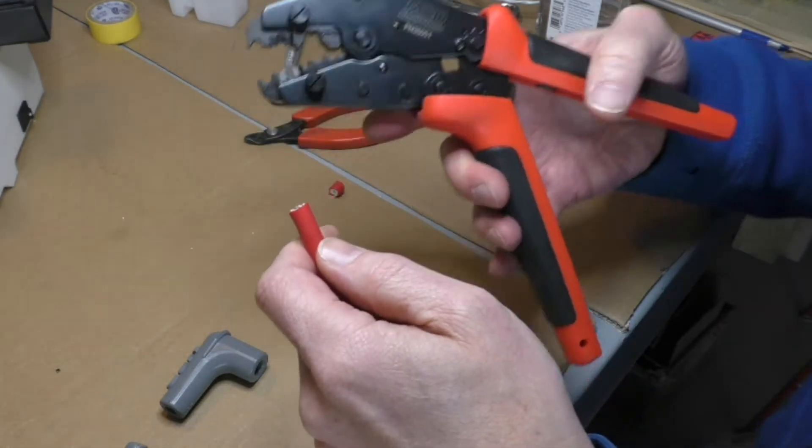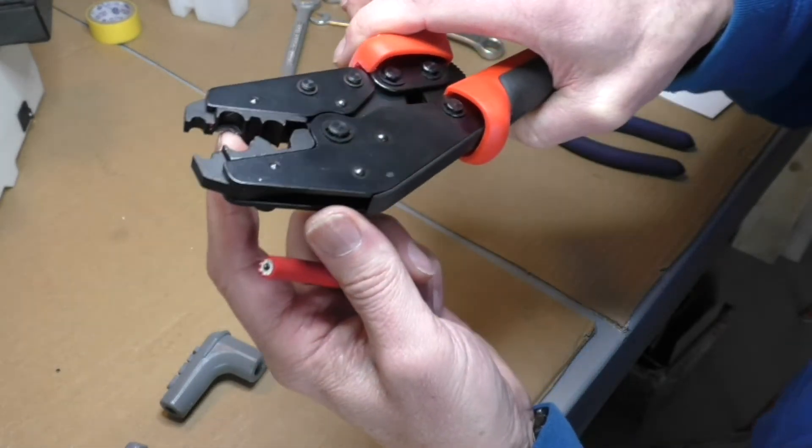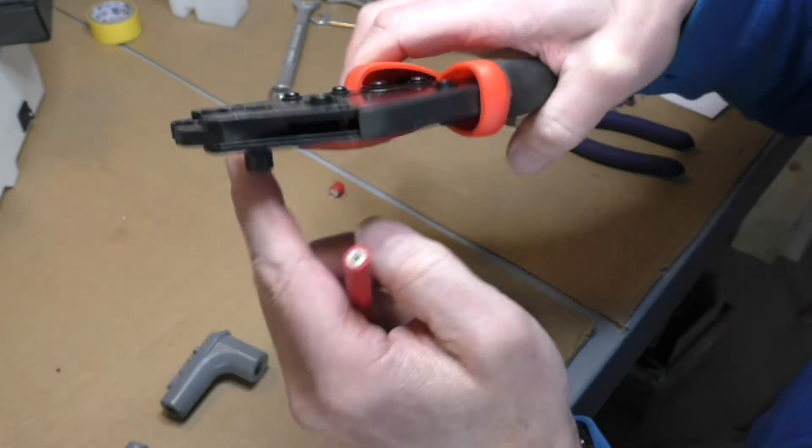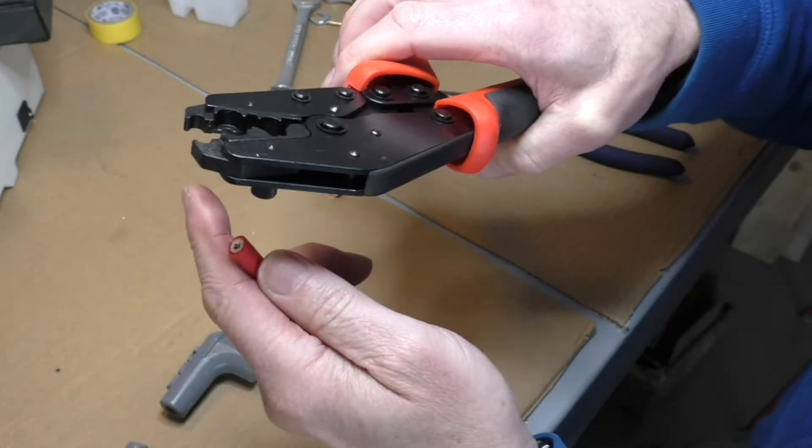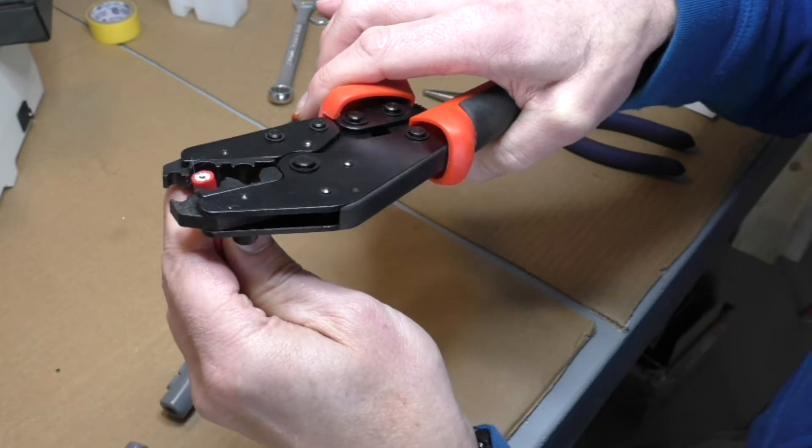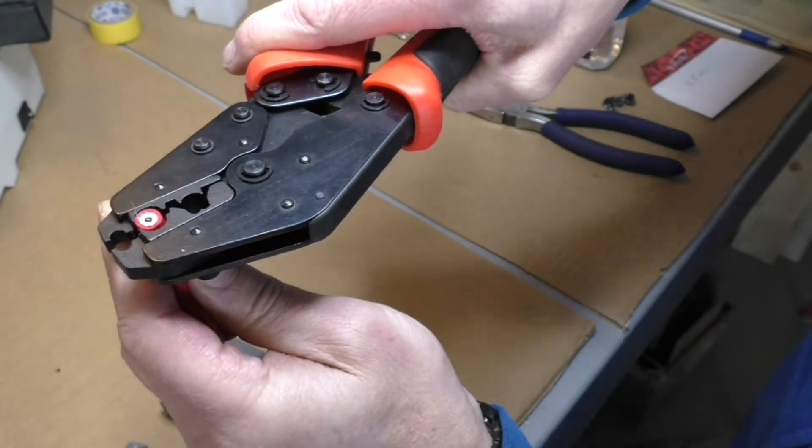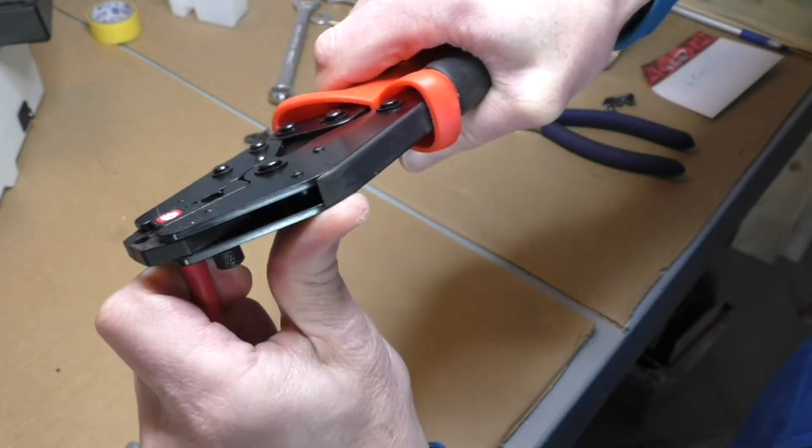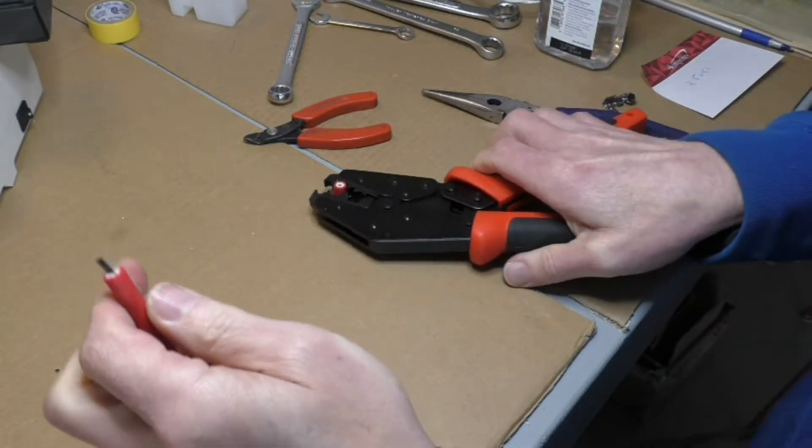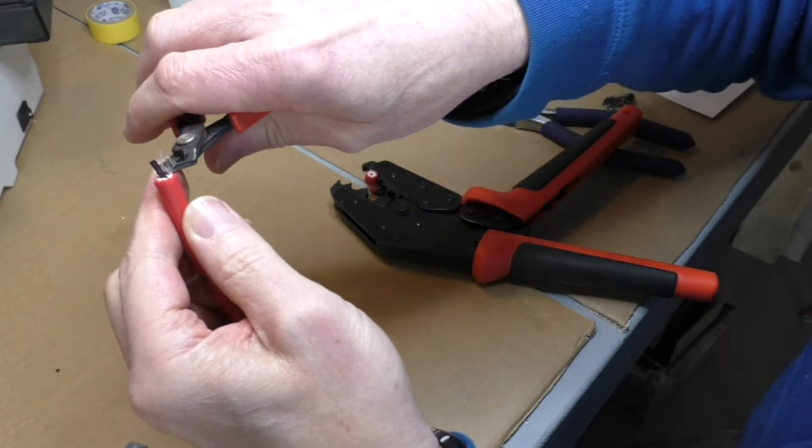We're going to take our spark plug wire here and insert it into the jaws for stripping. You'll notice here that these are not symmetrical. We want to strip about a quarter of an inch of the insulation off here. So we'll put it in flush with the jaw here, compress fully and just pull. You see that does a fairly nice job of stripping the insulation off.